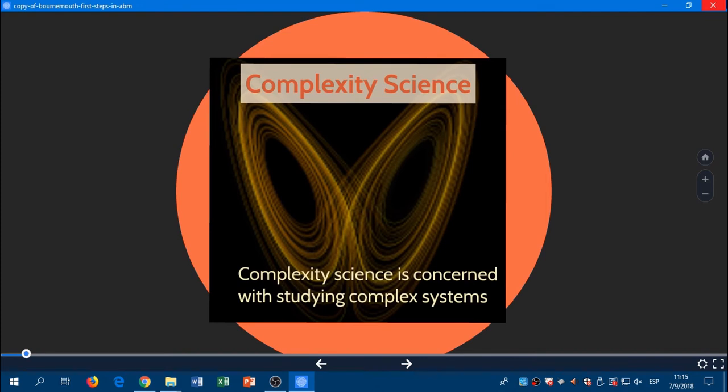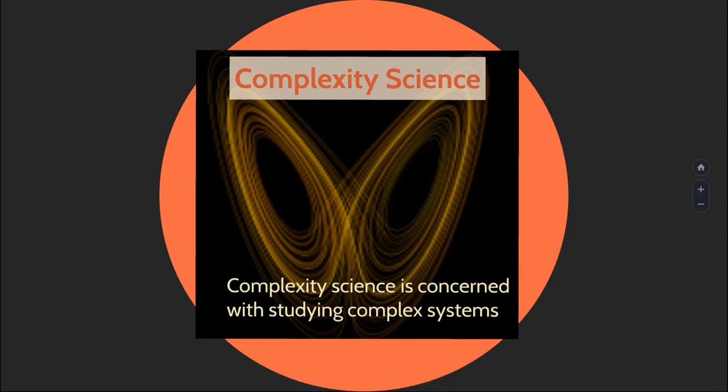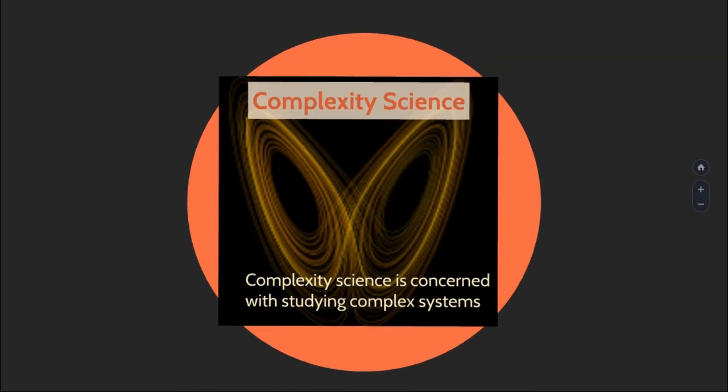The most basic one is complexity science. Complexity science is a branch of science that is concerned with studying complex systems. When you as an archaeologist think about complex systems, you probably mean complex hierarchical societies. This is not the definition that is used across the science. Let's look at what a complex system is.